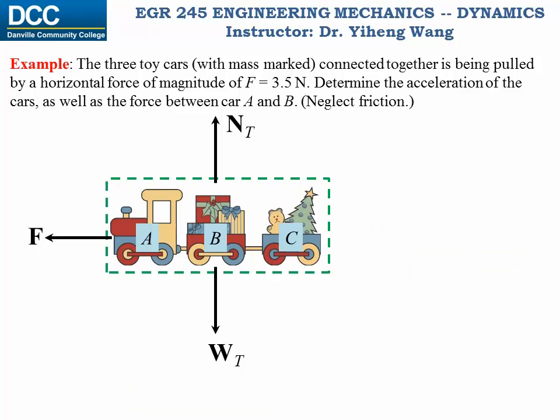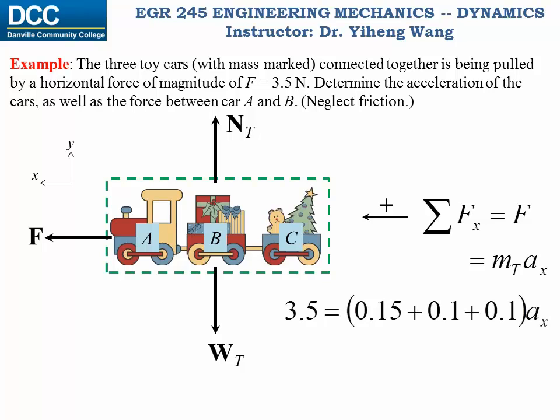Now before we write the equation of motion, we need to set up our coordinate system. We choose the positive x direction to be conveniently pointing to the left. Therefore the resultant force along the positive x direction, which is simply the applied force 3.5 newton, and this equals the total mass times the acceleration along the x direction. We substitute in all the numbers, and we can calculate Ax to be 10 meters per second squared, also pointing to the left. And this is the answer to the first part of this problem.